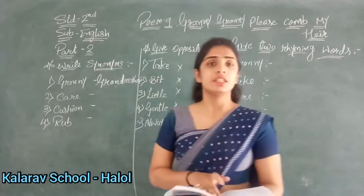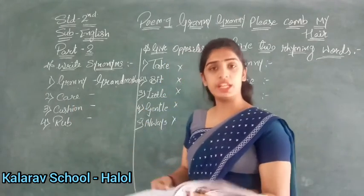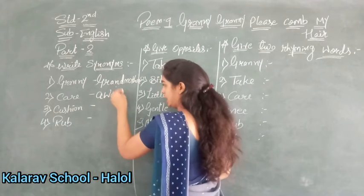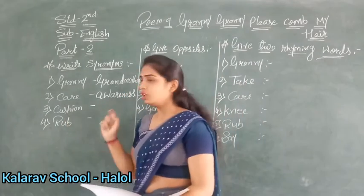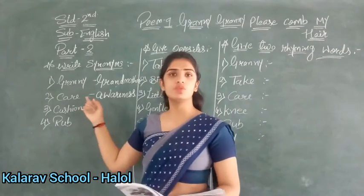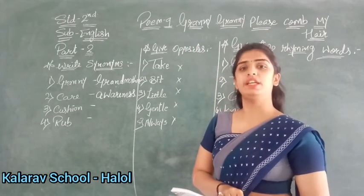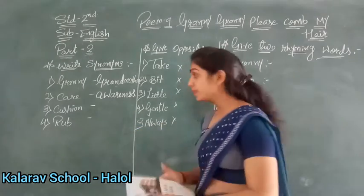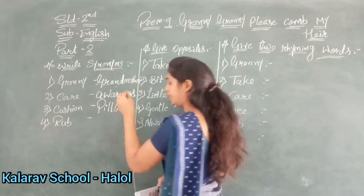Next, third number — cushion. Cushion means pillow. We have learned that in the poem. So for cushion the synonym we will use is pillow. Pillow ka spelling: P-I-L-L-O-W. Clear? Now next, fourth number is rub. Rub means when mommy massages our hair. That is known as rub. So what we will use here for rub? Massage. M-A-S-S-A-G-E.